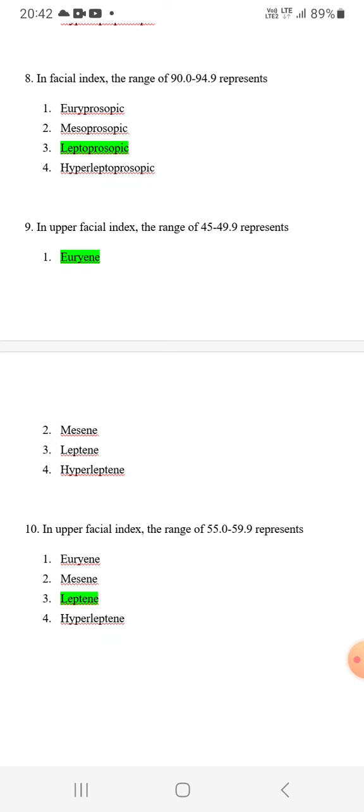In upper facial index, the range of 45 to 49.9 represents urine. Number 10: In upper facial index, the range of 55 to 59.9 represents leptin.